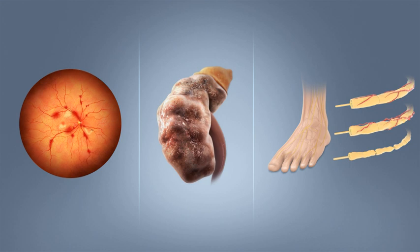Type 1 diabetes mellitus is characterized by loss of the insulin-producing beta cells of the pancreatic islets, leading to insulin deficiency. This type can be further classified as immune-mediated or idiopathic. The majority of type 1 diabetes is of the immune-mediated nature, in which a T-cell-mediated autoimmune attack leads to the loss of beta cells and thus insulin. It causes approximately 10% of diabetes mellitus cases in North America and Europe. Most affected people are otherwise healthy and of a healthy weight when onset occurs. Sensitivity and responsiveness to insulin are usually normal, especially in the early stages.